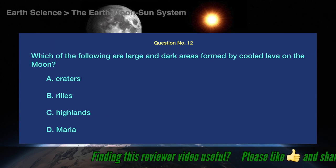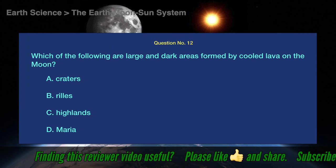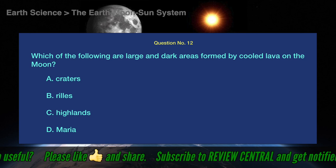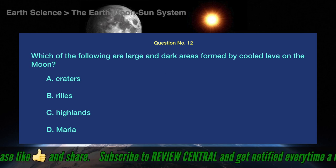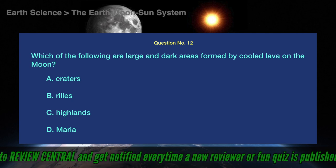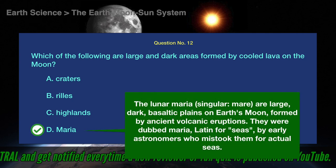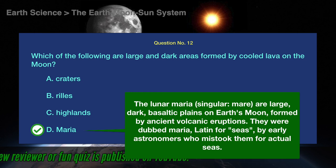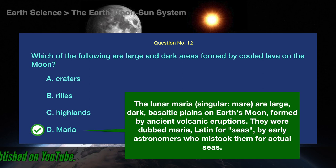Question number 12. Which of the following are large and dark areas formed by cooled lava on the Moon? A. Craters. B. Rills. C. Highlands. D. Maria. The correct answer is D. Maria. The lunar Maria — singular, Mare — are large, dark, basaltic planes on Earth's Moon, formed by ancient volcanic eruptions. They were dubbed Maria, Latin for seas, by early astronomers who mistook them for actual seas.